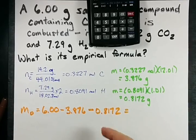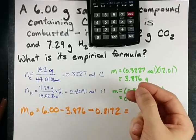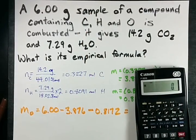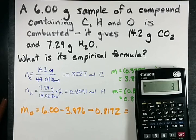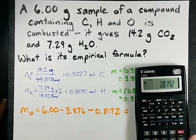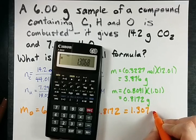The remaining mass had to have come from the other oxygen in the molecule that we weren't told anything about. 6 minus 3.876 minus 0.8172 gives me a mass of oxygen of 1.307.